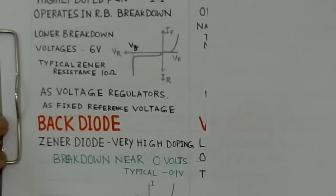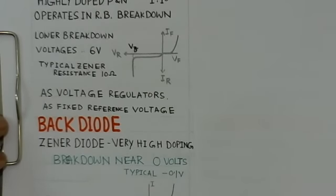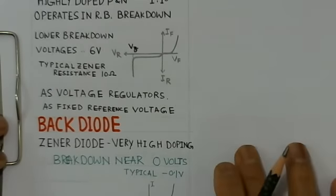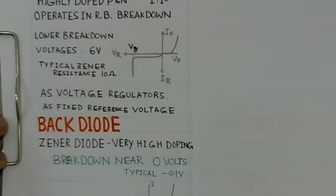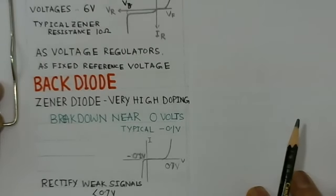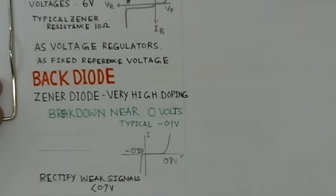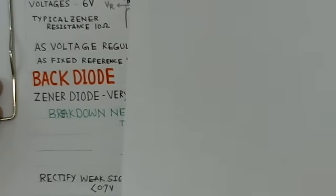The back diode is basically a Zener diode having a very high doping level — so high that the breakdown voltage occurs around -0.1 volts. This is the typical characteristic of a back diode. It finds application for rectifying weak signals having a value less than 0.7 volts. It is essentially a real variation of the Zener diode.